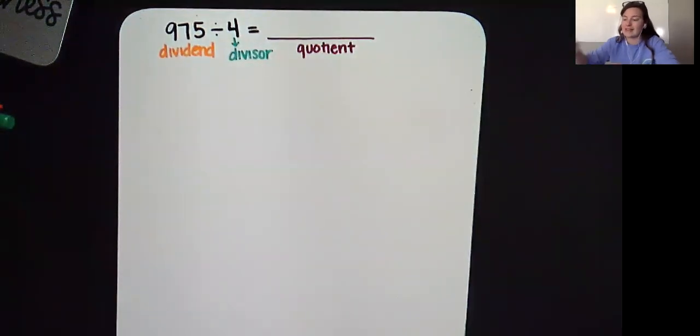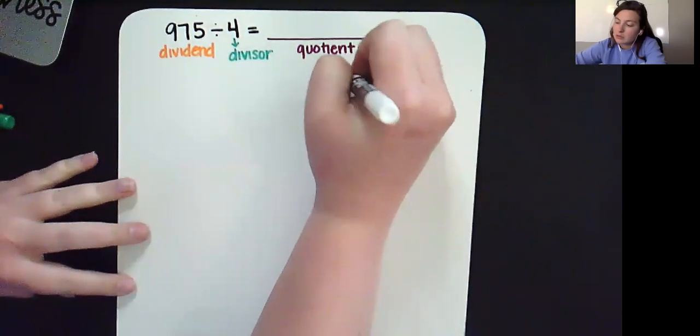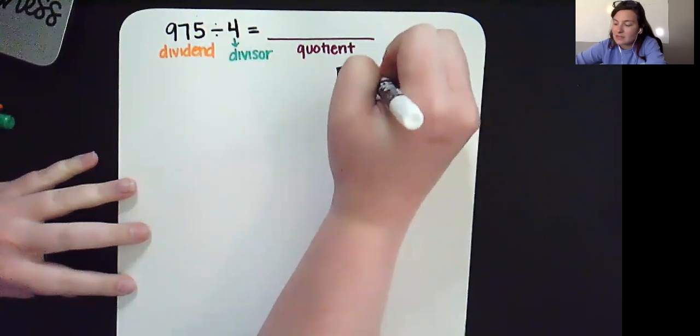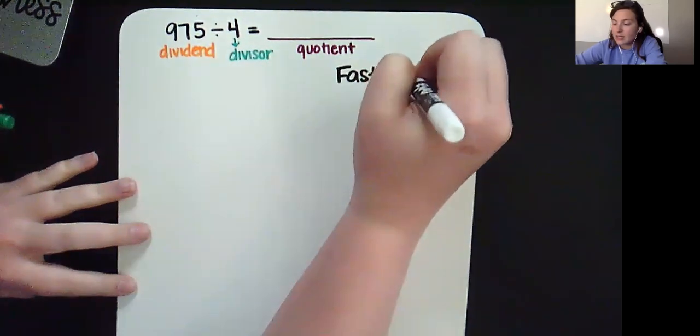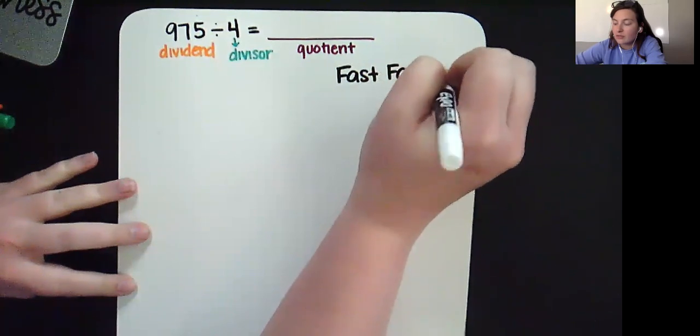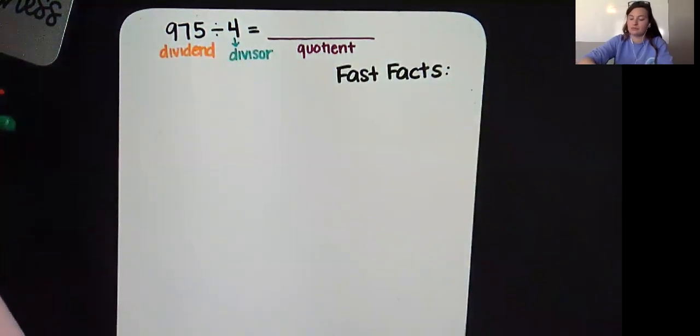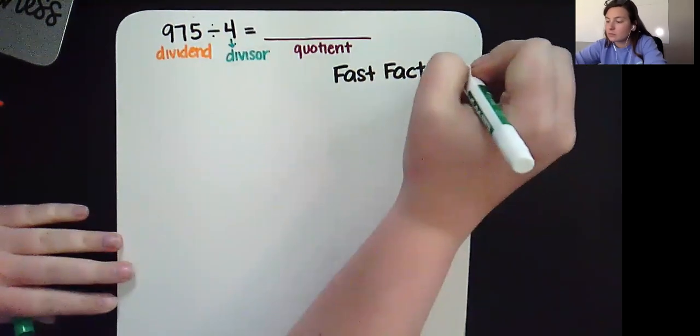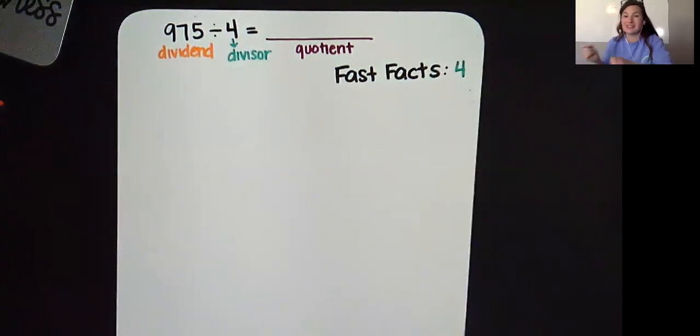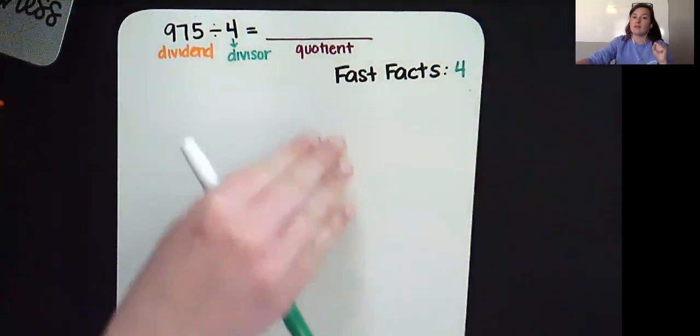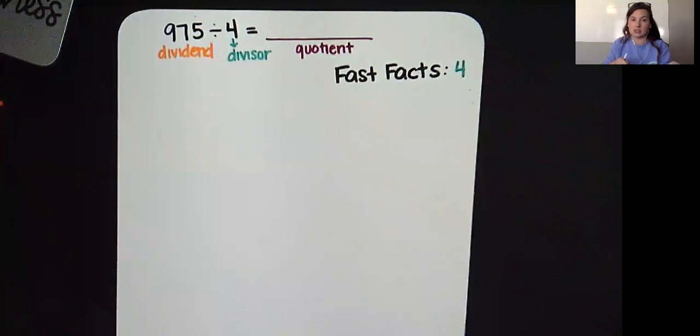Now I'm going to get ready for the Fast Facts. And remember, we make our Fast Facts using our divisor. So we're going to do the Fast Facts of 4. Now to save us some time, I'm going to go ahead and pause the recording, fill this out, and then come back to you.